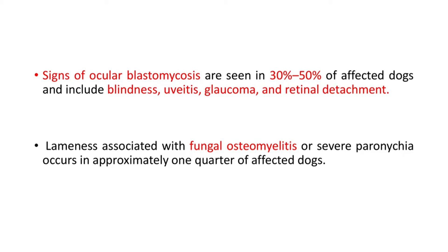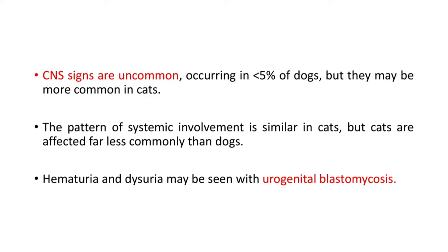In 25% of affected dogs, lameness is caused by bone involvement. CNS signs are uncommon, occurring in less than 5% of dogs, but may be more common in cats. The pattern of systemic involvement is similar in cats, but cats are affected far less commonly than dogs. Hematuria and dysuria may be seen with urogenital blastomycosis.